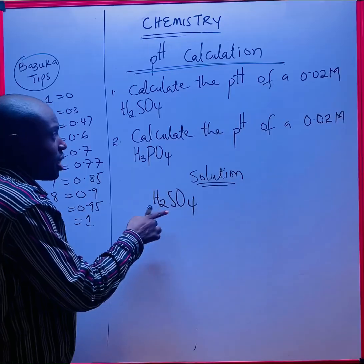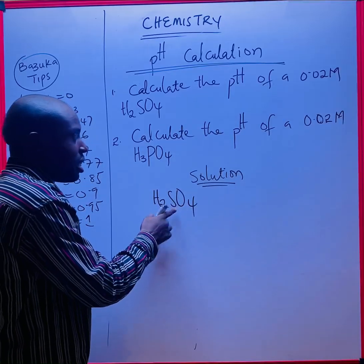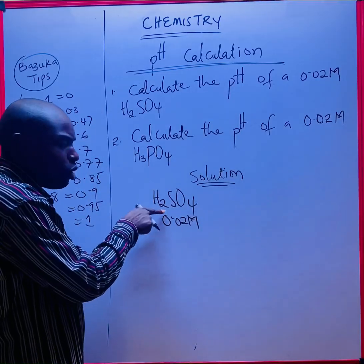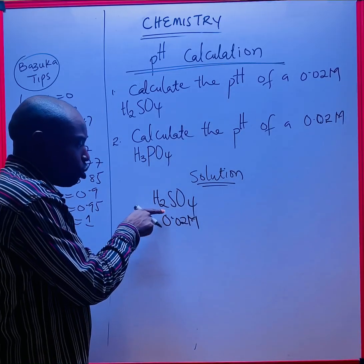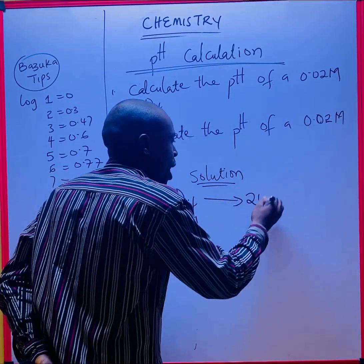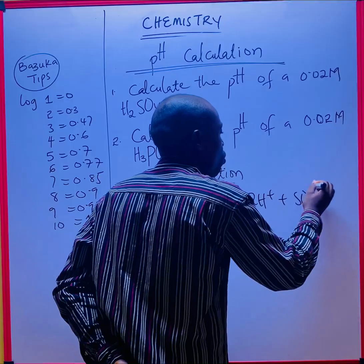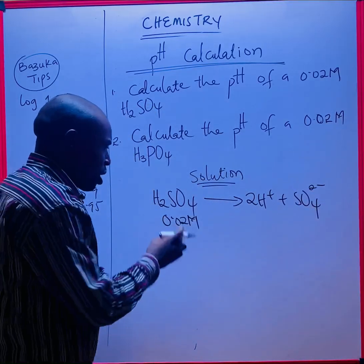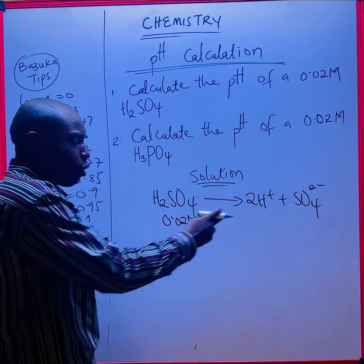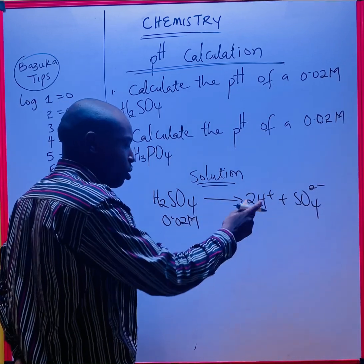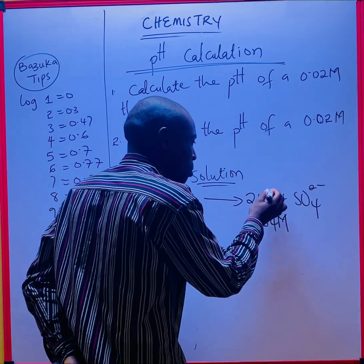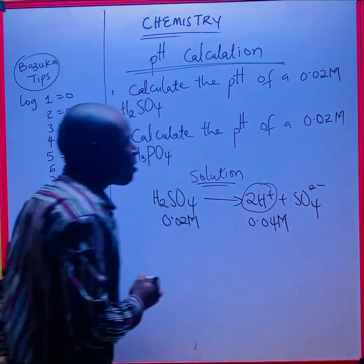If I'm having H2SO4 and the concentration of this acid is 0.02 molar, of course if I'm having two hydrogen here it will be two multiplied by this. We're having 2H+ plus SO4. For one mole I'm having 0.02, then for two moles of the hydrogen ion it will be 0.04 molar. This is what I'm interested in.